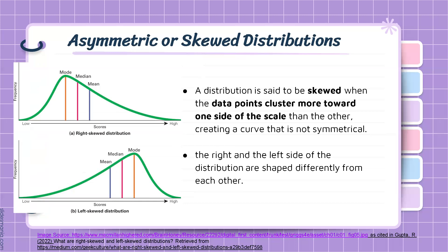How about the asymmetric or skewed distribution? A measure of skewness shows the degree of asymmetry or departure from symmetry of a distribution. It indicates not only the amount of skewness, but also the direction. A distribution is said to be skewed when the data points cluster more toward one side of the scale than the other, creating a curve that is not symmetrical, just like what is shown in this current slide. The right and the left side of the distribution are shaped differently from each other. An asymmetrical distribution has a longer tail on one side, meaning there's more concentration of values or data points above or below the mean.